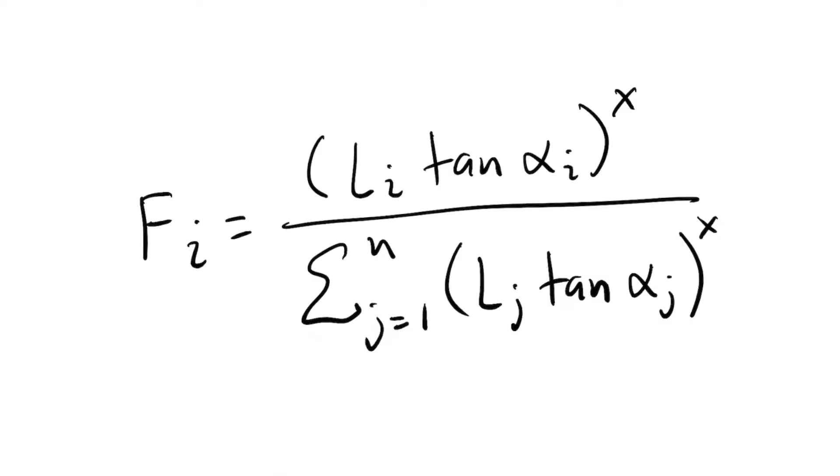Going back to the equation, alpha i is the gradient, and so the tangent of alpha i is the slope, x is an exponent that controls the dispersion, and n is the number of neighbors of the cell. Note how the bottom part of the equation is just a way to normalize all the flows.